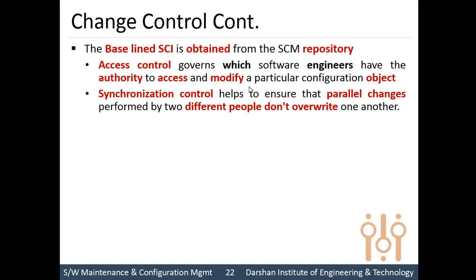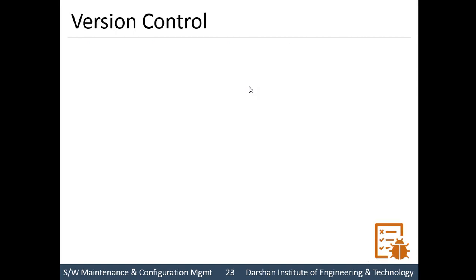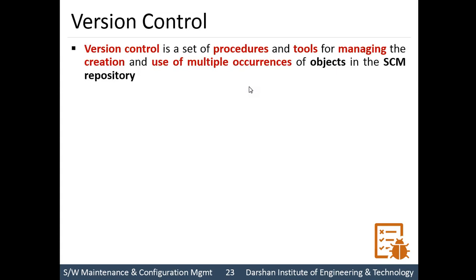The ECO also specifies which software engineers have authority to access or modify a particular object. Synchronization control ensures that parallel changes performed by different people working on the same object are properly synchronized. After all changes are completed and there is a need to release a version of the software, version control is needed.